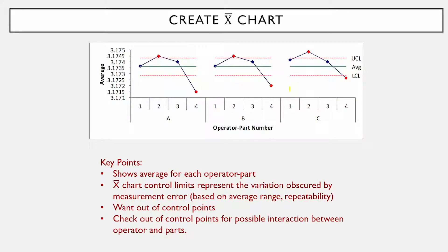Then you create an X-bar chart. What we're doing is showing the average for each operator-part combination. Operator A runs part one three times and here's the average, part two three times and here's the average — the same for operators B and C. Then we calculate the overall average as well as the control limits. The control limits use the average range, and remember the average range is based on repeatability. So the difference between the upper and lower control limits represents the variation that is obscured by measurement error.